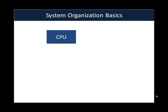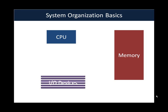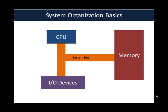System organization basics. In any given computing system we have the CPU, or central processing unit. Then we have memory, which is where things are stored at runtime — that would be your RAM. And then we have input/output devices, which would be your keyboard, your monitor, your mouse, etc. The way in which these three basic building blocks communicate is using the system bus.